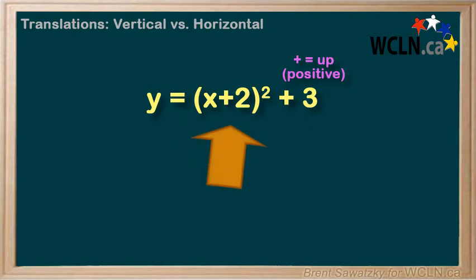The plus 2 in here, on the other hand, tells us that we're shifting the graph left by 2, a negative direction.